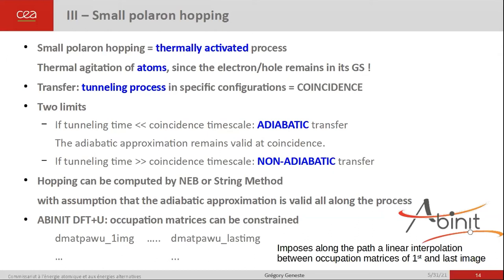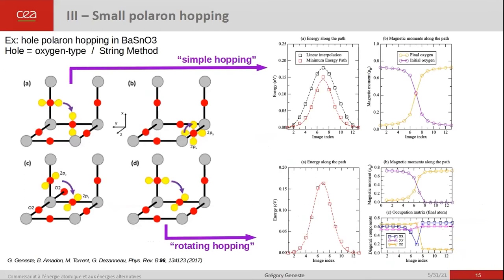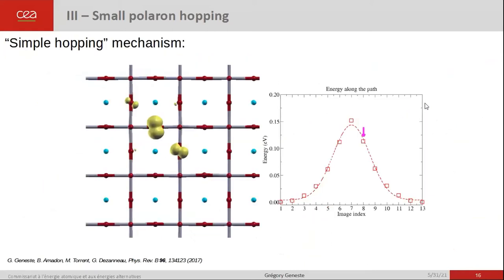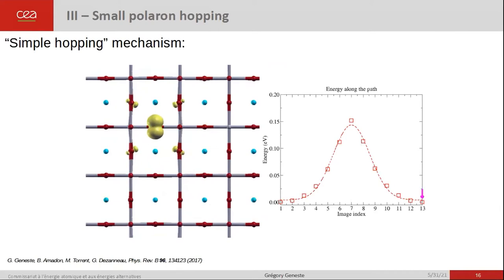In Abinit with the FTEP2 approach, the computation is made easier by the fact that the occupation matrices can be constrained for each image. If you just give them for the first and last image, a linear interpolation will be applied. Here is an example for different kinds of hopping concerning the oxygen-type hole polaron in barium stannate. The different mechanisms are all associated with energy barriers, and the progressive transfer of the polaron can be observed by the evolution of the magnetic moment on the initial and final atom. You can also see an animation of this simple hopping mechanism, and when you are at the top of the barrier you can see the coincidence configuration in which the polaron is exactly equally shared between the two atoms, the initial and the final one.